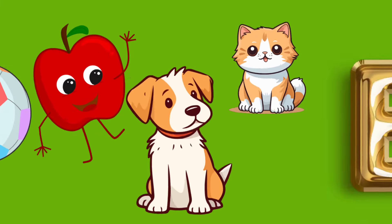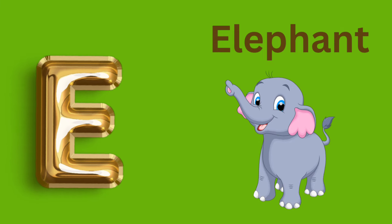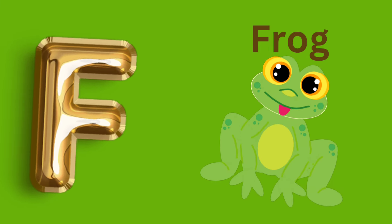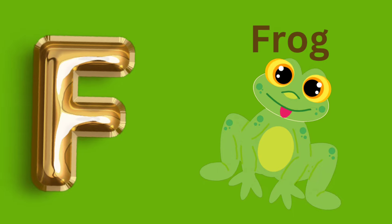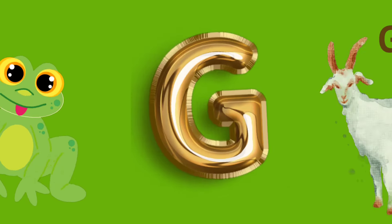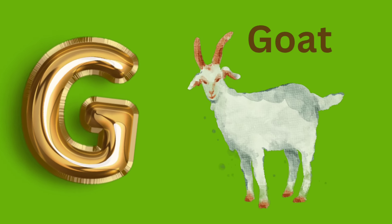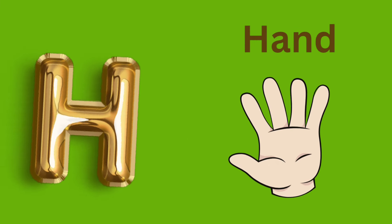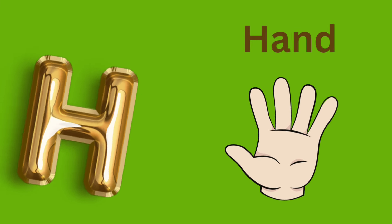E is for Elephant, e, e, elephant. F is for Frog, f, f, frog. G is for Goat, g, g, goat. H is for Hand, a, a, hand.